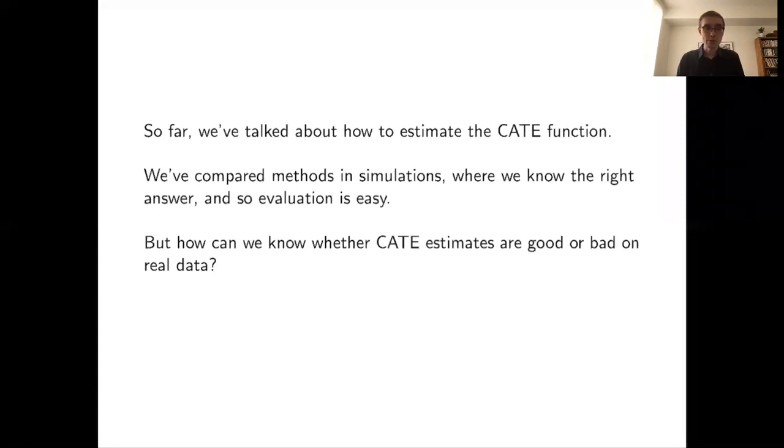So far, we've mostly focused on simulations where we knew the right answer a priori, so comparing methods was easy. But in real-world data, we don't know what tau of x is a priori, so we're going to need to come up with some new ideas for evaluating estimators for CATE. Some questions I want to focus on here include: given two different estimates for CATE, which one is better? Or even more simply, given one estimate for CATE, is it providing any value or is it worse than just predicting zero everywhere?